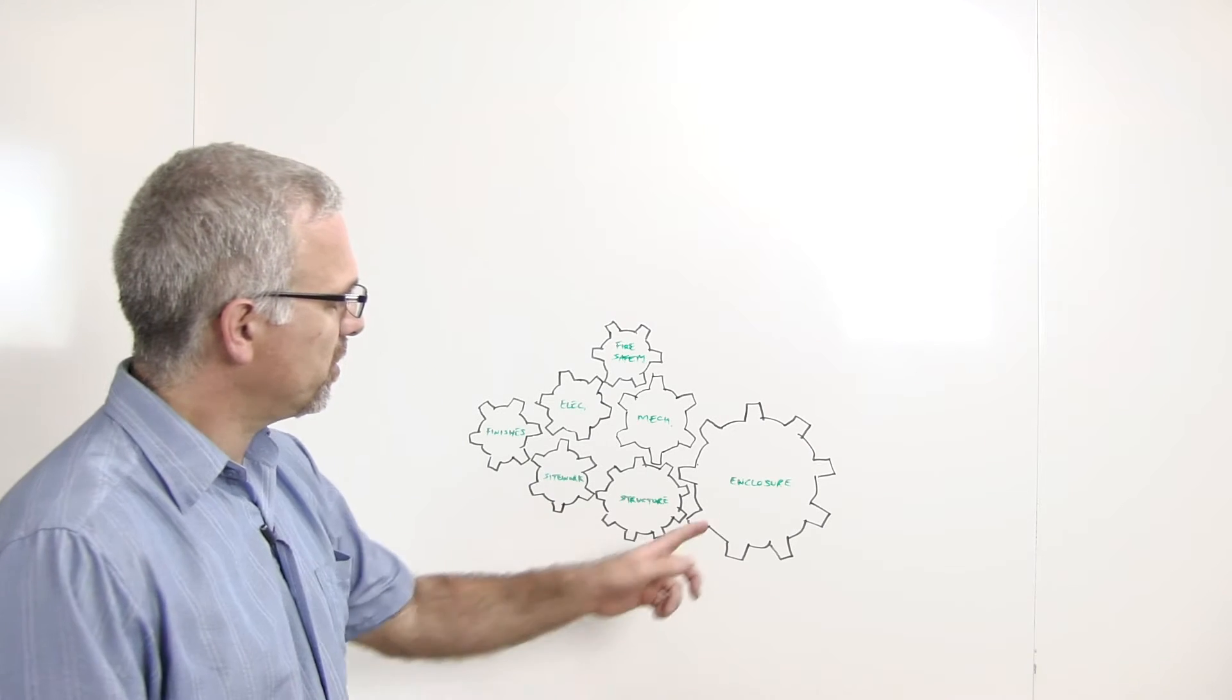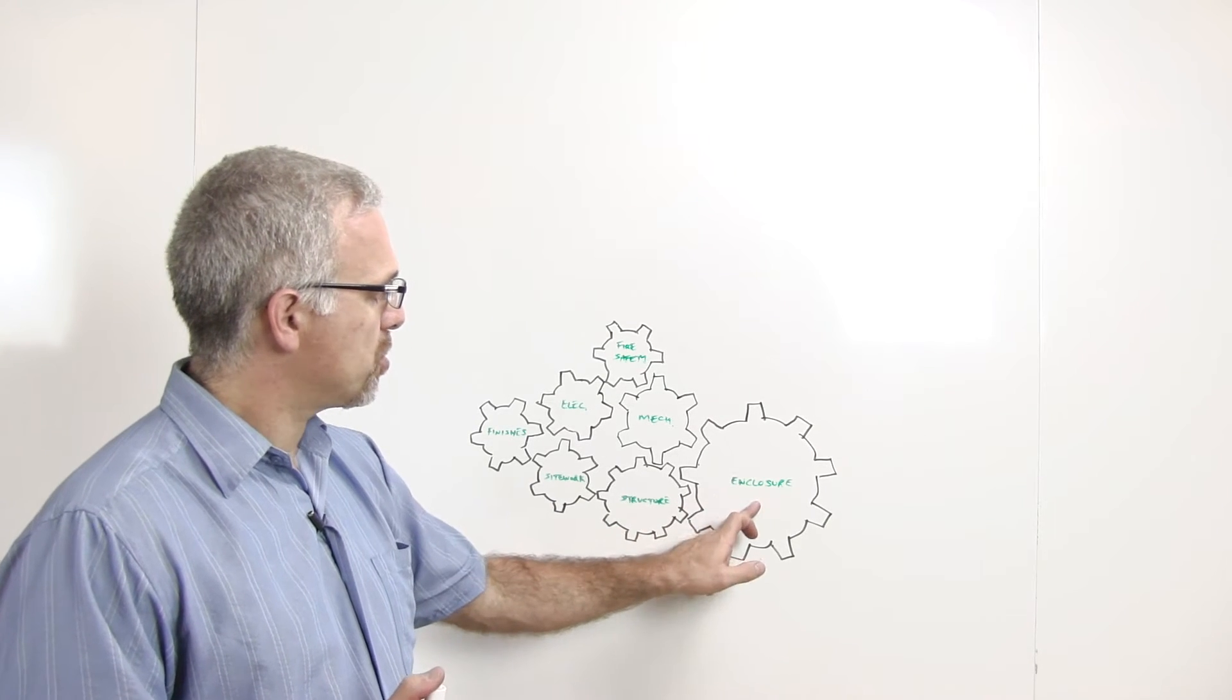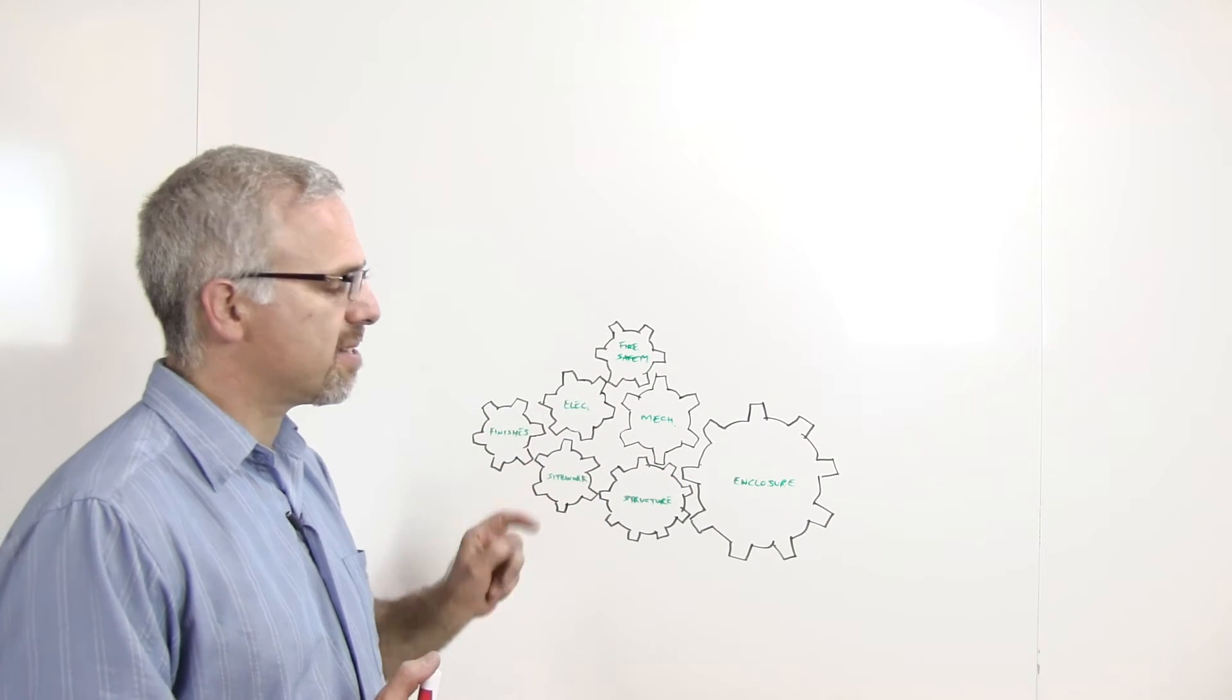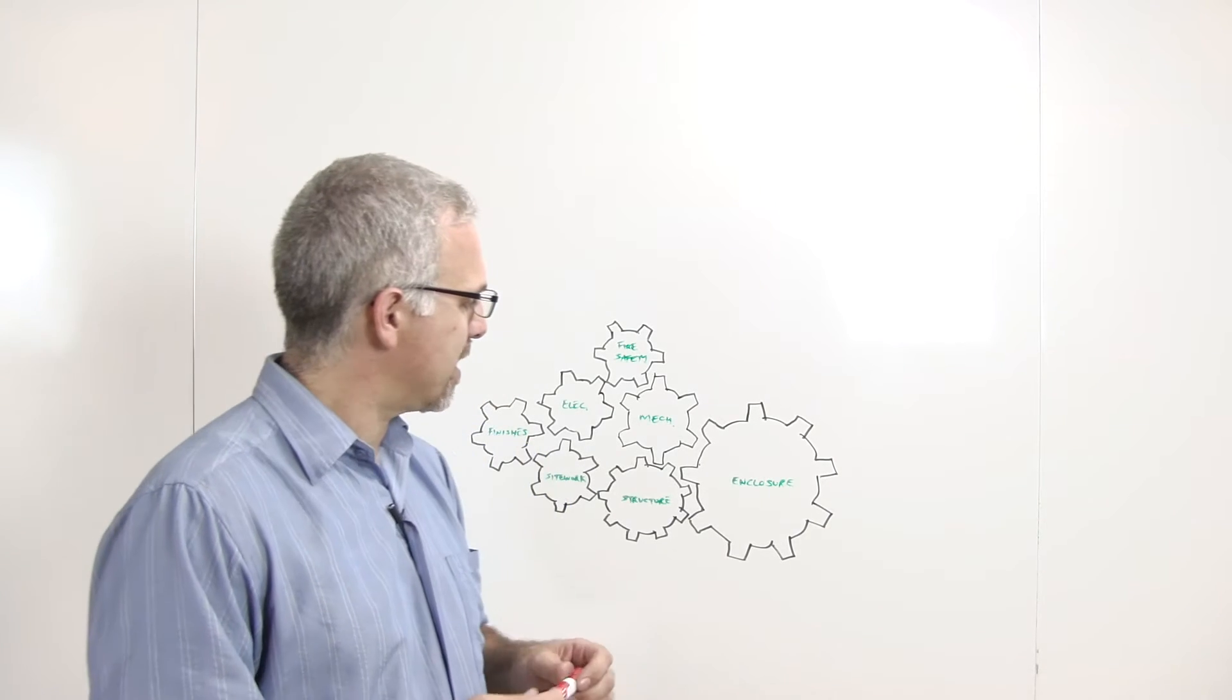And very briefly, the first system we'll talk about is the structure, then we'll talk about the enclosure, mechanical, electrical, fire safety, finishes and site work. And I'm going to use again the human body as an analogy.